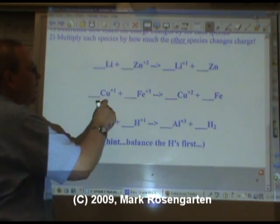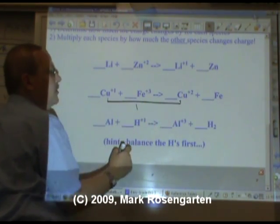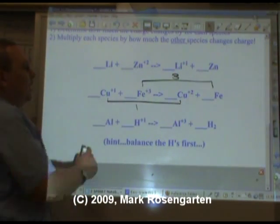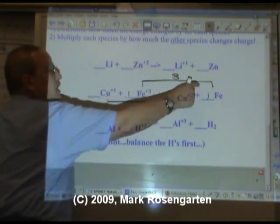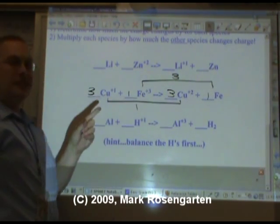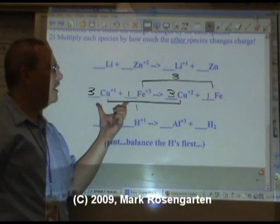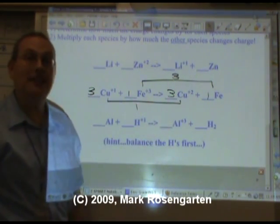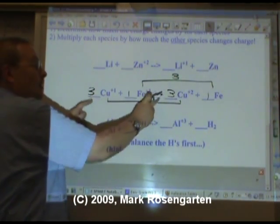Here's a couple more examples. The copper changes its charge by one from plus one to plus two. The iron changes its charge by three. So the copper changes by one, multiply the iron by one. The iron changes by three, multiply the copper by three. Now look what this gives us. Plus three and plus three is plus six on this side. Then on this side, we have three times plus two. That's also plus six. The law of conservation of charge and mass are obeyed.